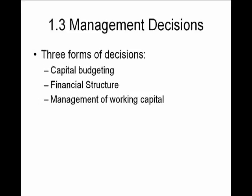Chapter 1, Section 3: Management Decisions. There are three primary decisions that financial managers must make: what projects to finance, how to finance those projects, and how day-to-day operations will be carried out. Financial managers answer these questions by making three forms of decisions, which are capital budgeting, financial structure, and management of working capital.